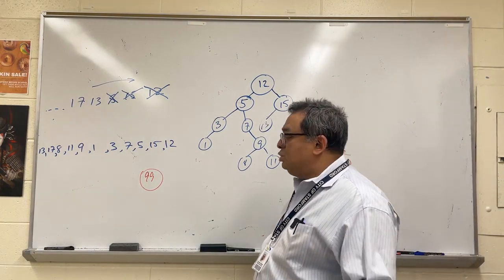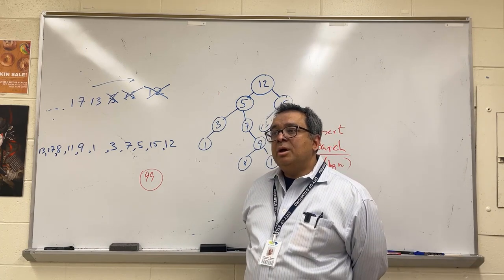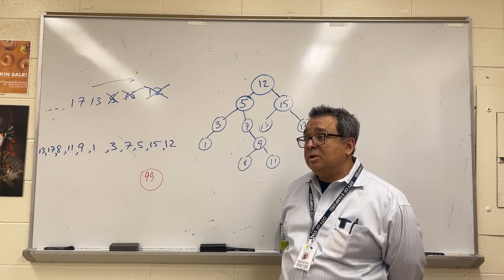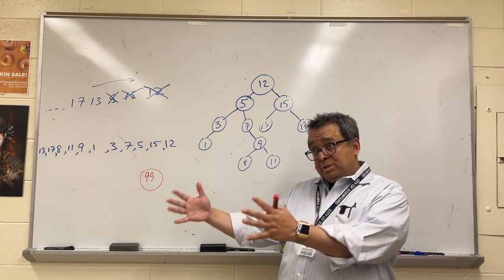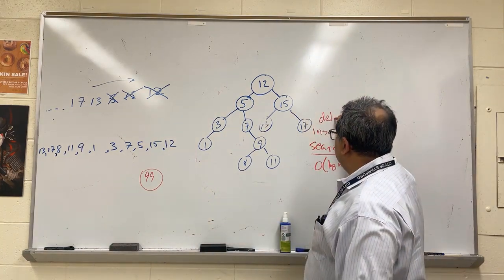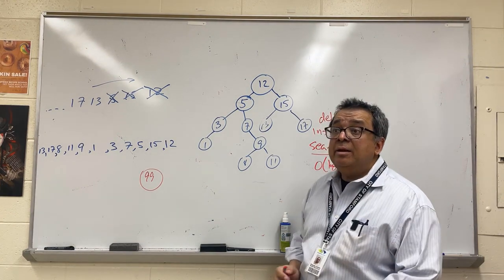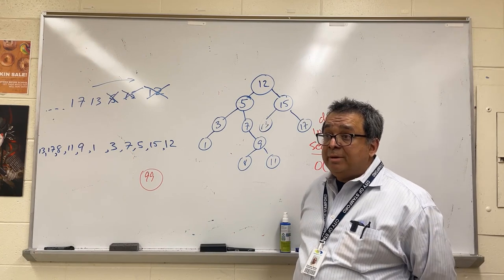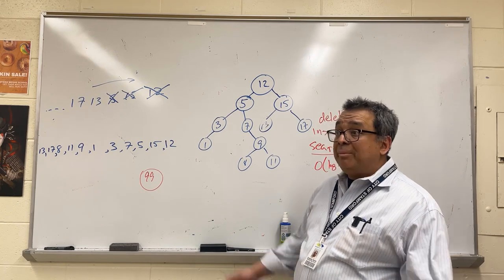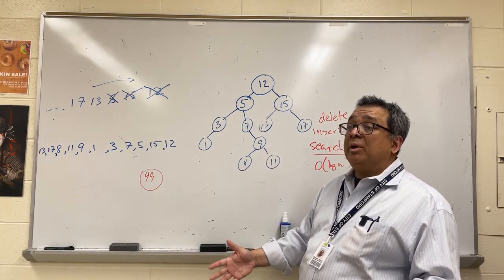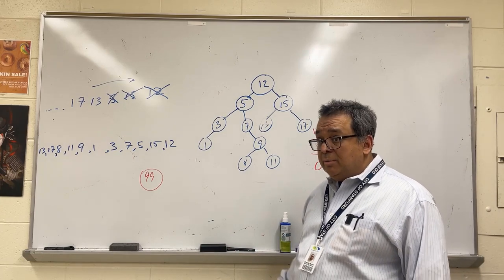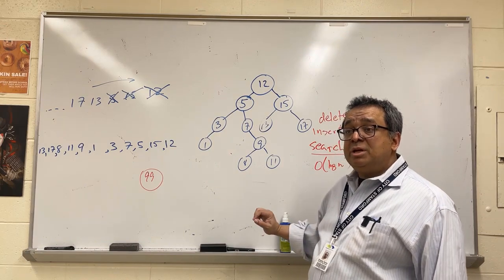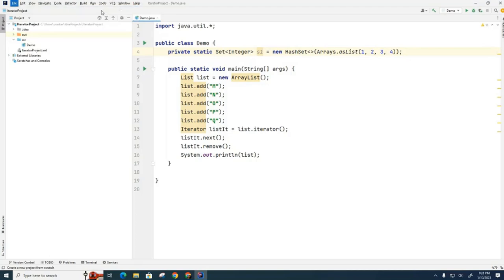Deletion is a little trickier. It has two parts: first you have to find it - O(log n) - and then the actual deletion. Put those together and you still get O(log n). So deletion is also O(log n), but it's the only hard thing about binary search trees - so hard I'm going to spend almost an entire class on it next time. If I have to delete a node that has subtrees built up below it, it's not obvious what to do.